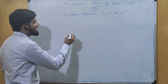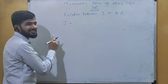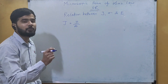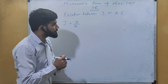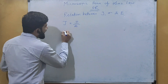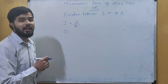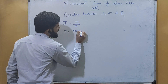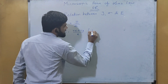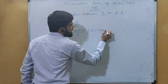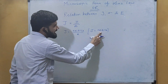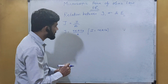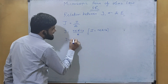First, we write the formula for current density: j equals current per unit area at a particular point. We can write j equals I divided by A. Now, expressing current I in terms of drift velocity, we have I equals n·e·A·v_d, so dividing by A, the area cancels and we get j equals n·e·v_d.